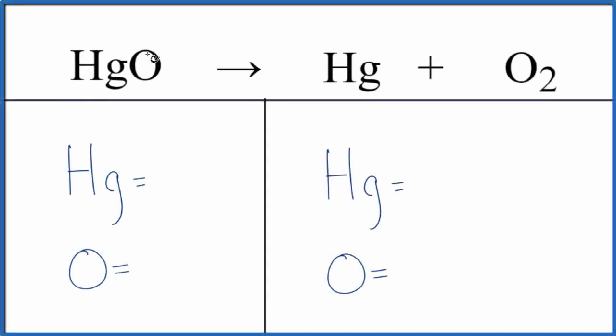Let's balance the equation for the decomposition of mercury oxide, that's HgO, into mercury and oxygen gas. We'll also look at the type of reaction.